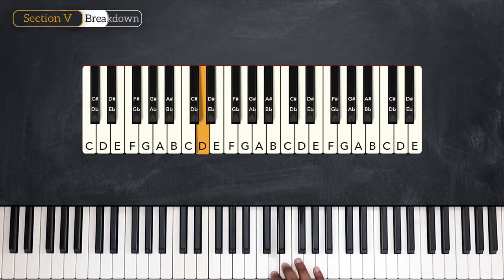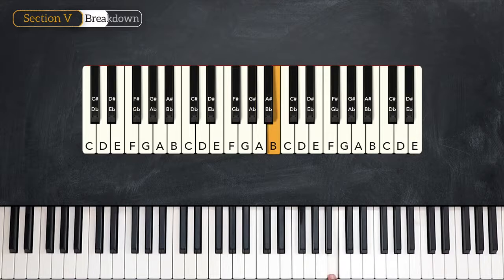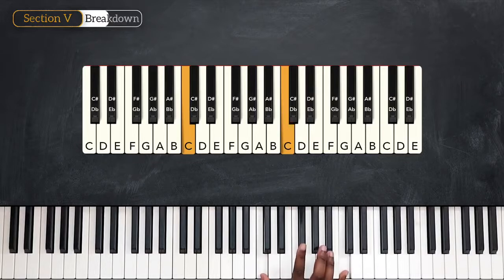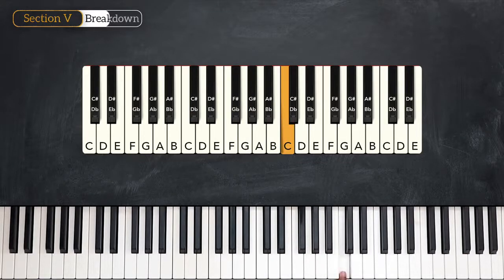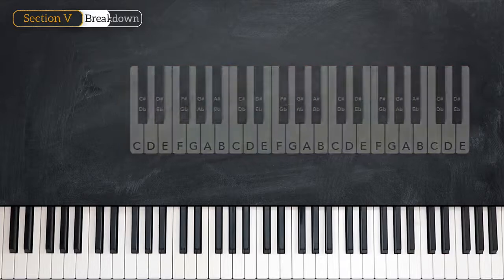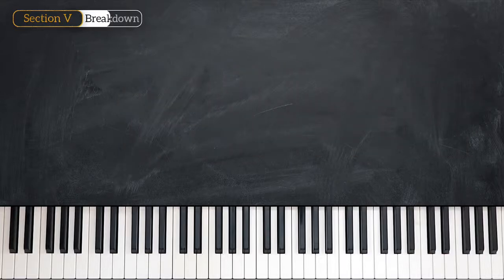One, two, three, four, five, six, seven — and then the next one is not eight, it's still C, so let's call it one. One, two, three, four, five, six, seven, and one again. Simple as that. Now, why is the number system used in music? It's because it makes our lives much easier.